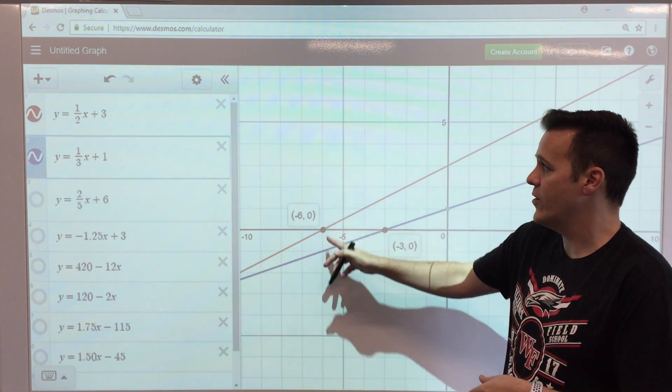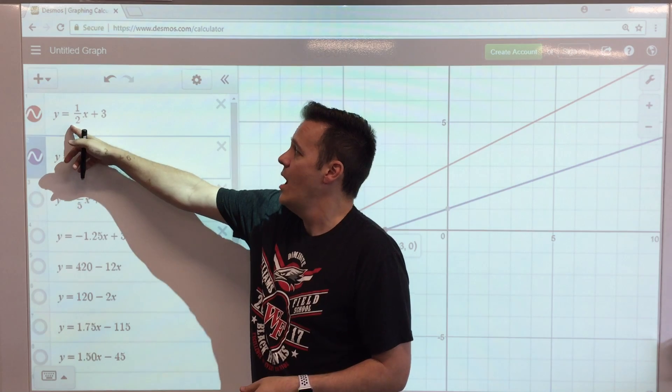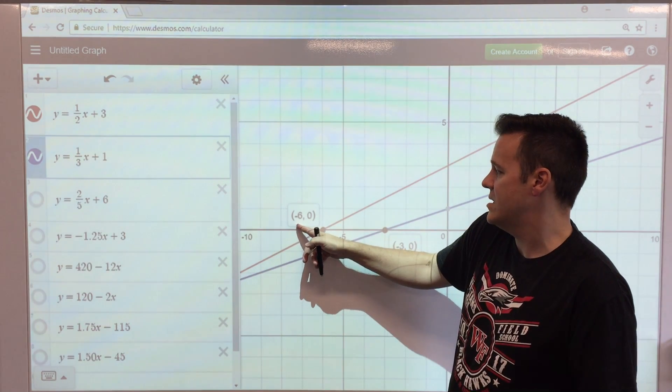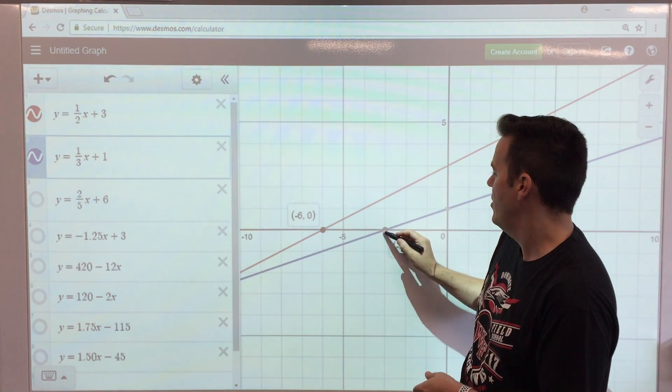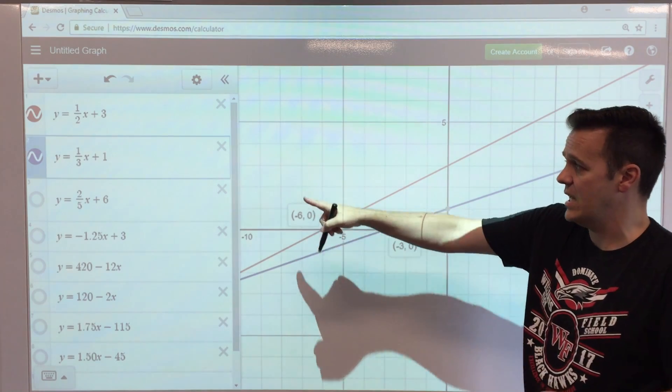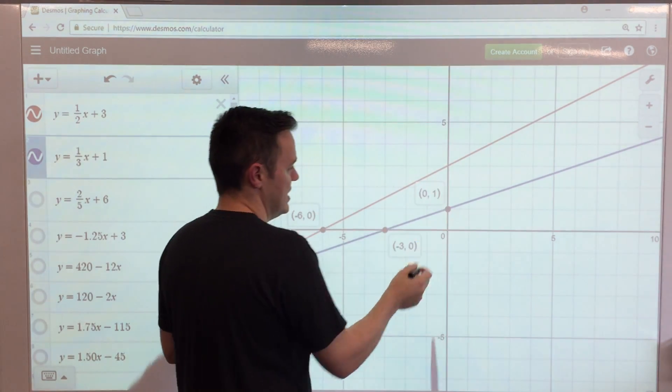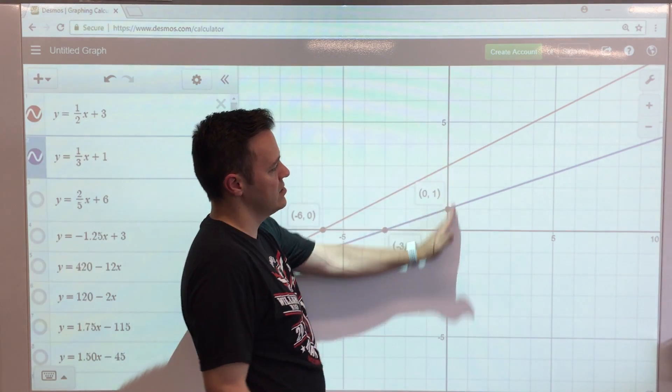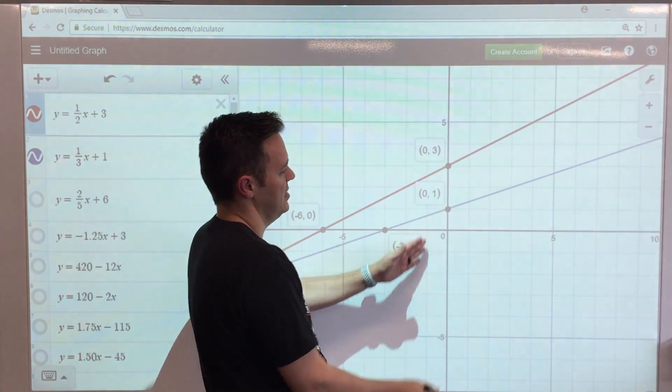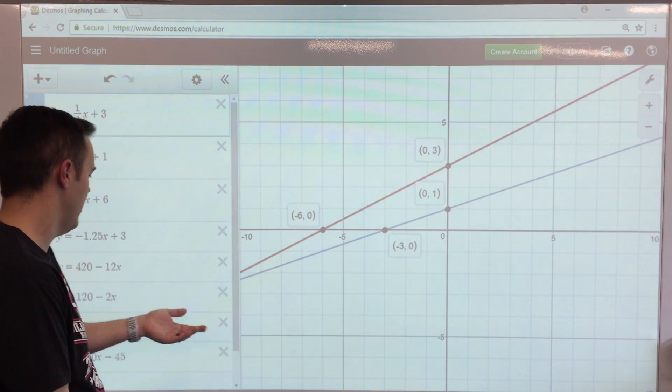For the first equation which is in red, our x-intercept is negative 6, 0. And the blue one, which is the second equation, x-intercept is negative 3. That's all I'm looking for today. If I asked you for the y-intercept, you just click on the line and give me the y-intercept as well.